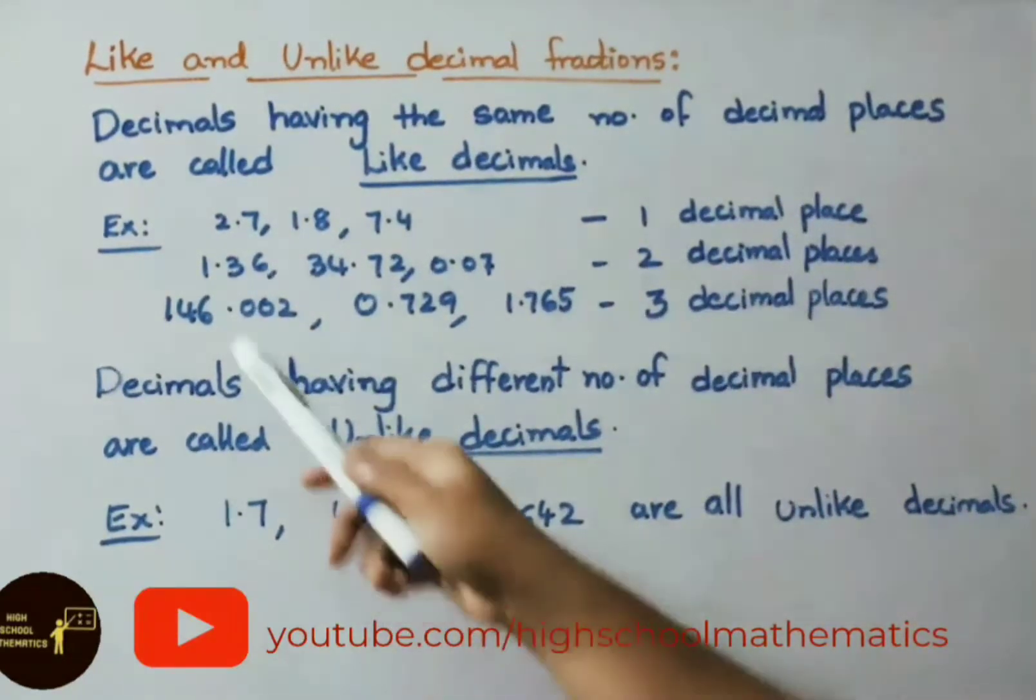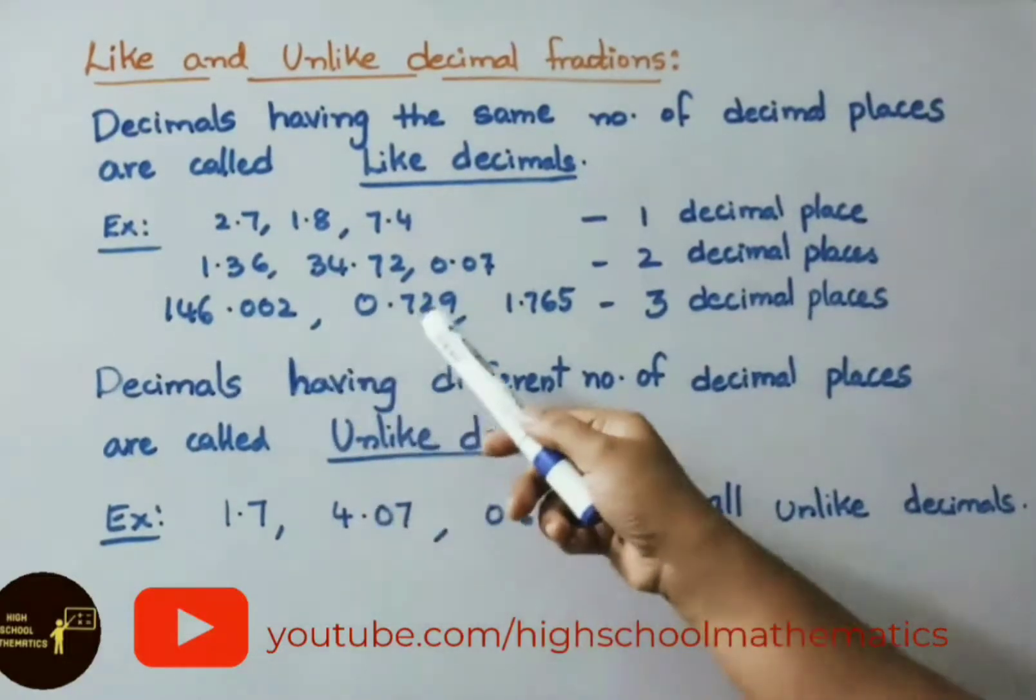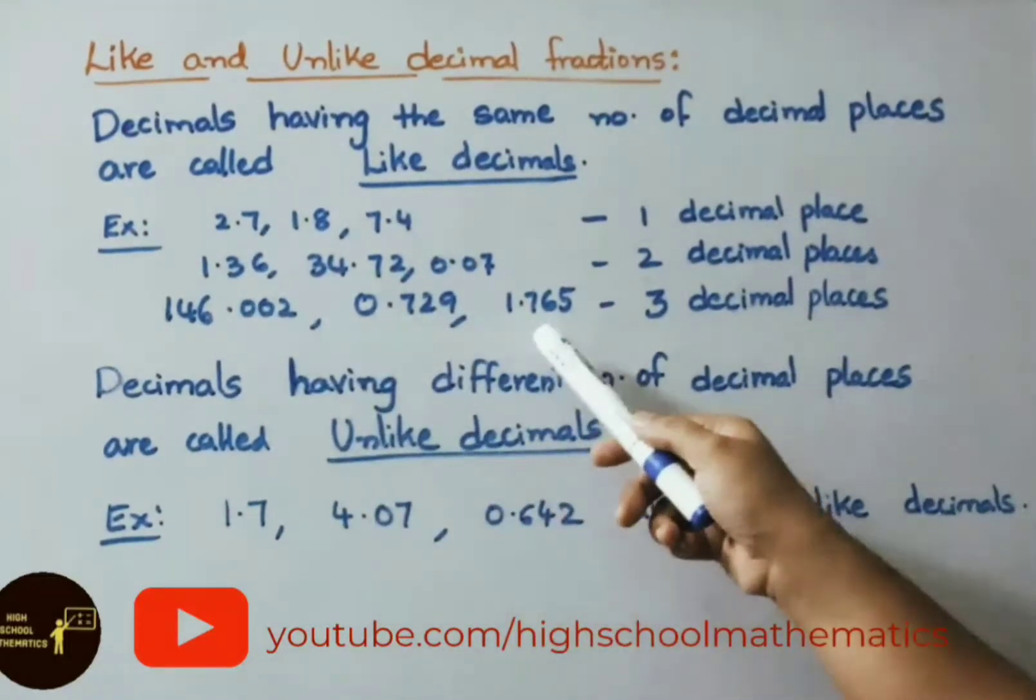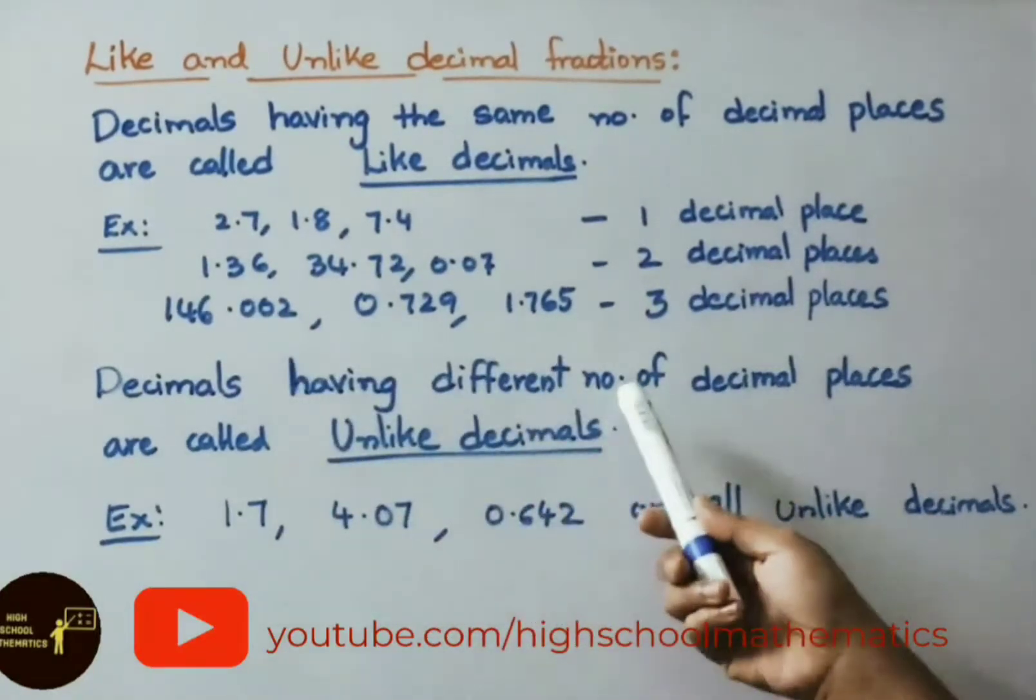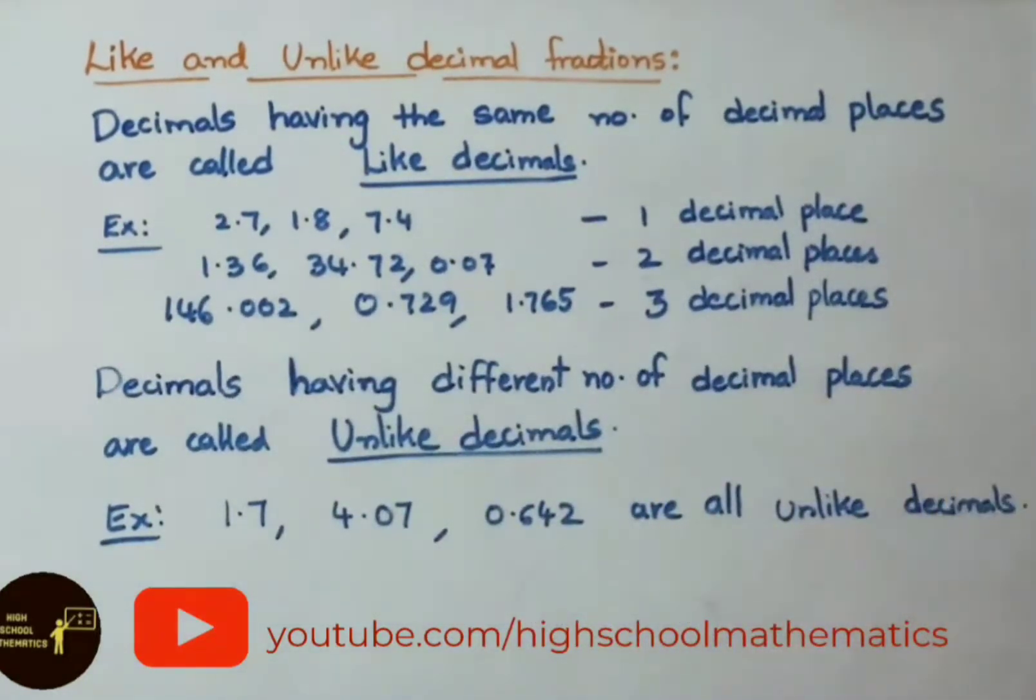See another example: 146.002, 0.729, 1.765. All these are having decimal after three values. So these are examples for three decimal places.